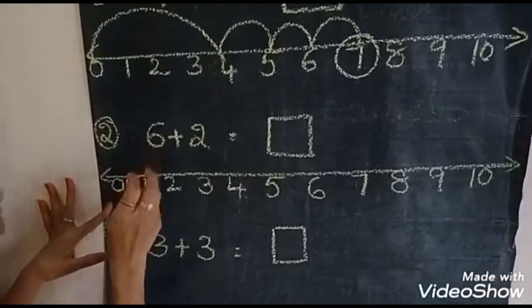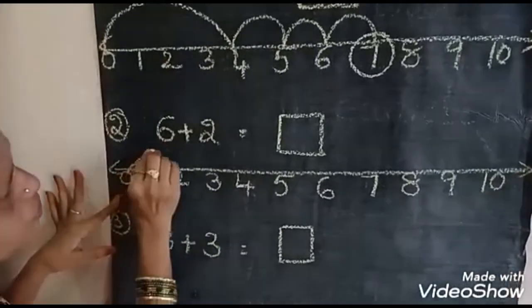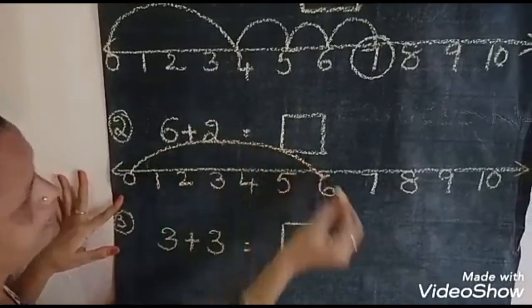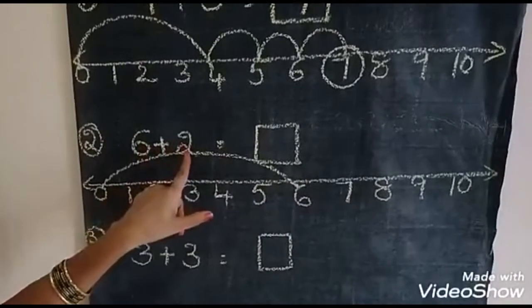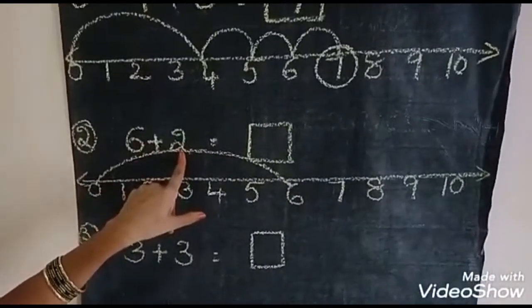What number is this? 6. Okay. You skip. 0 to 6. 0 to 6. 6 plus 2. How much number you add here? 2.